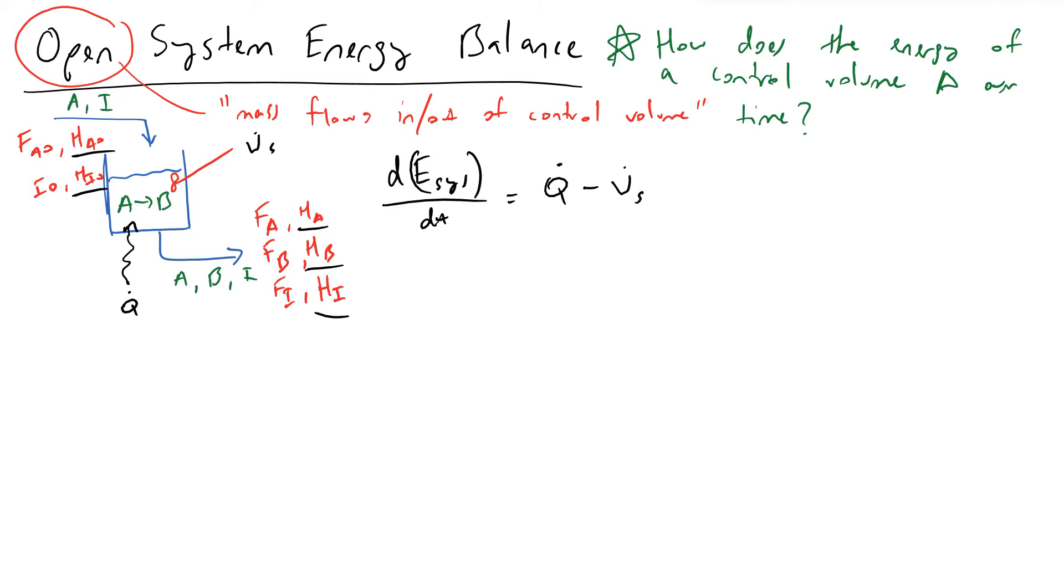To do that we will say that we have FA naught moles of A coming in per time times HA naught, the specific enthalpy which is the number of joules per mole of A that is in our inlet stream. We'll also have energy coming in through the enthalpy from our inlet stream I times its specific enthalpy.